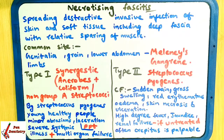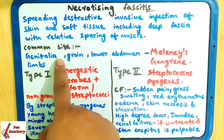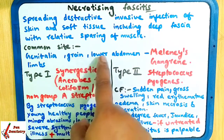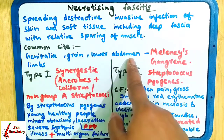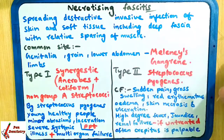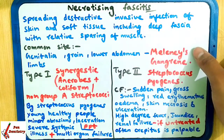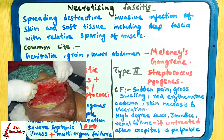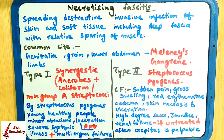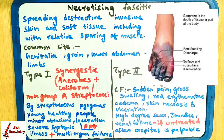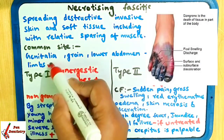What is the common site on your body? It is mostly the genital region, groin region, and lower abdominal region. If it happens in all these regions, it will be called Meleney's gangrene. It can also affect other sites, including the limbs.